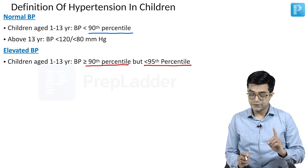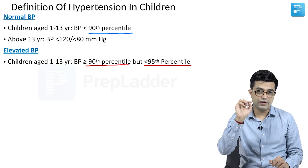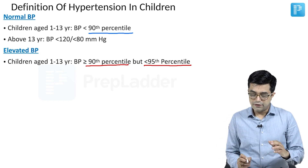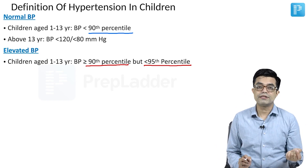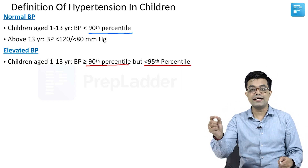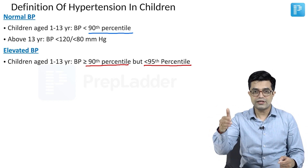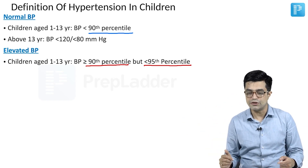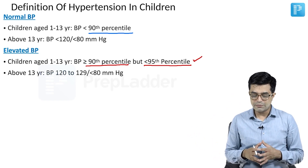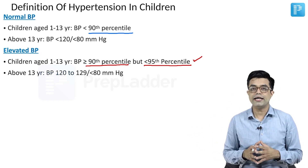Please remember: when we say normal BP it is less than 90th percentile — not equal to or less than. When we say elevated BP, it is equal to or more than 90th percentile but less than 95th percentile. For older children above 13 years, if the systolic BP is between 120 to 129 and diastolic is less than 80, we call it elevated BP.